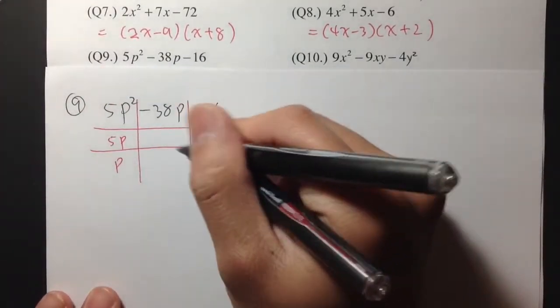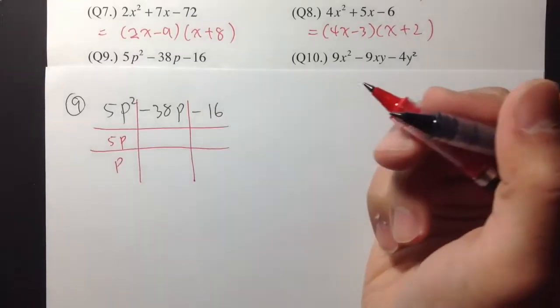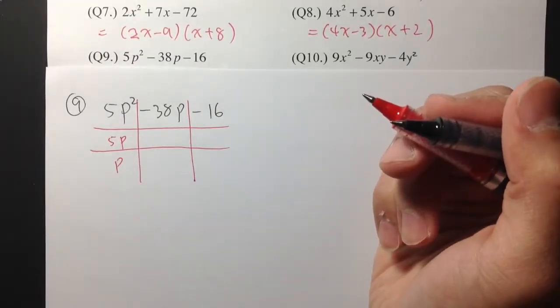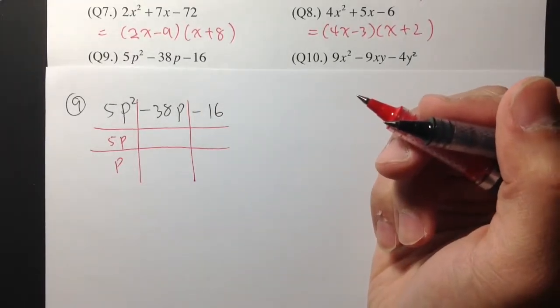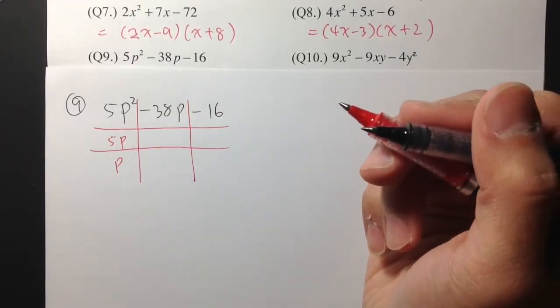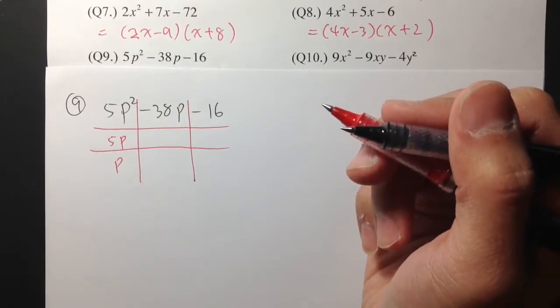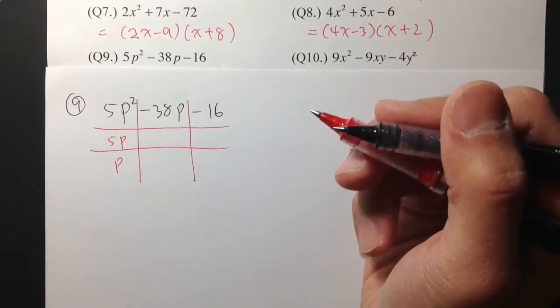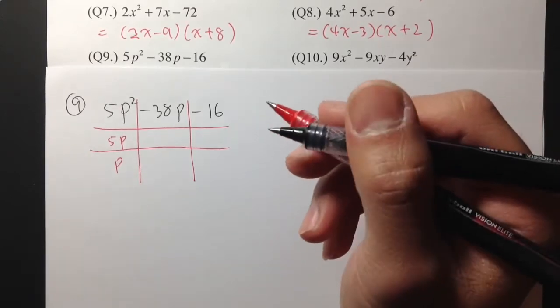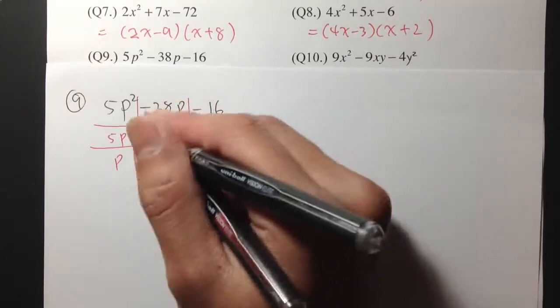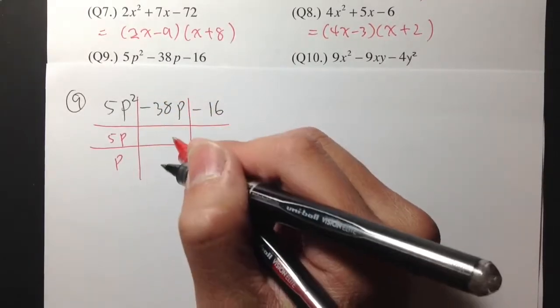And then to get negative 16, maybe we can do 4 times 4, or 8 times 2. And then we just need to make one of these numbers negative. Let me use the middle numbers right now.